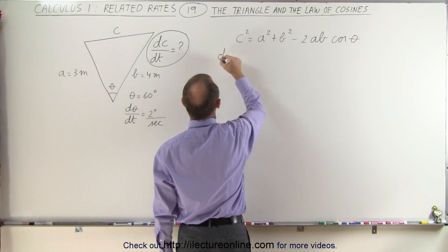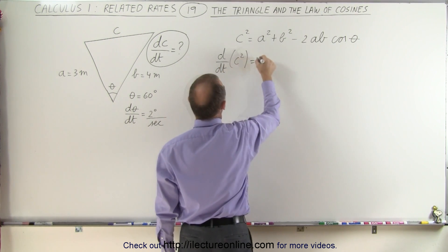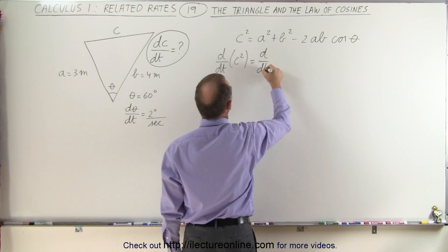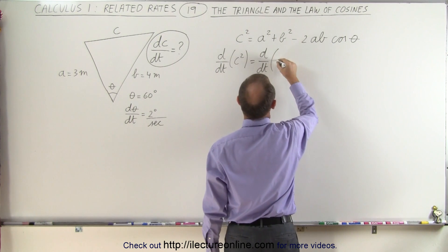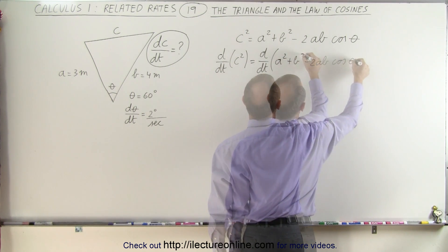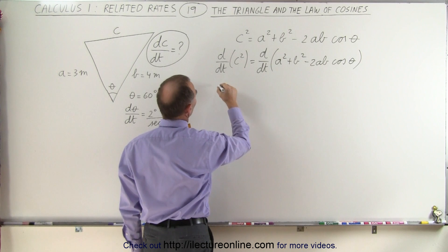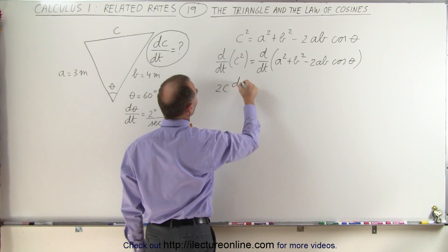We take the derivative with respect to time. On the left side, we end up with 2C times dC/dt.